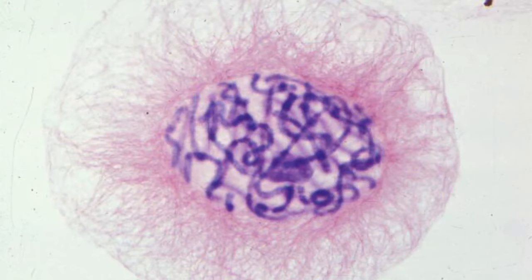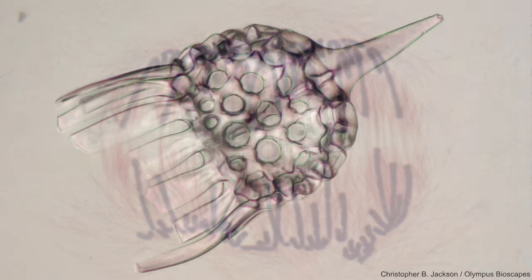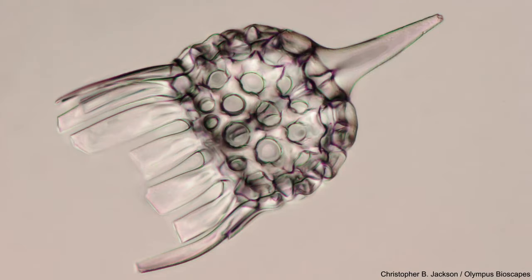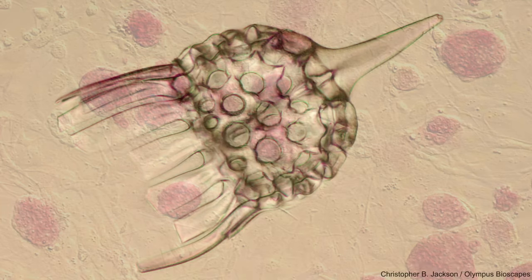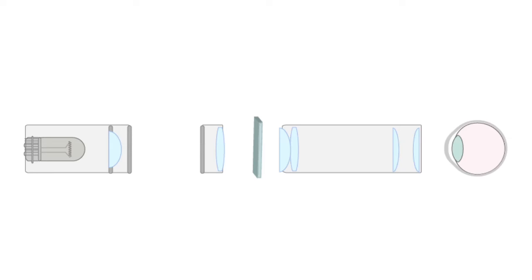Microscopy is also used to determine the presence or absence of certain types of cells or organelles in a sample or specimen of tissue, as well as to count the number of objects in a specific volume — for example, the number of cells in a sample.